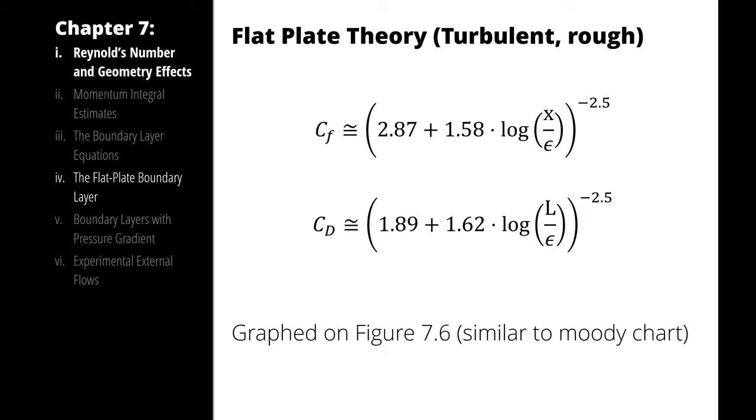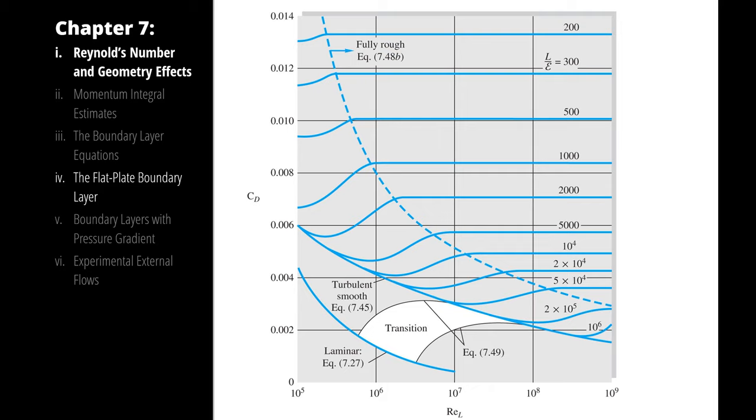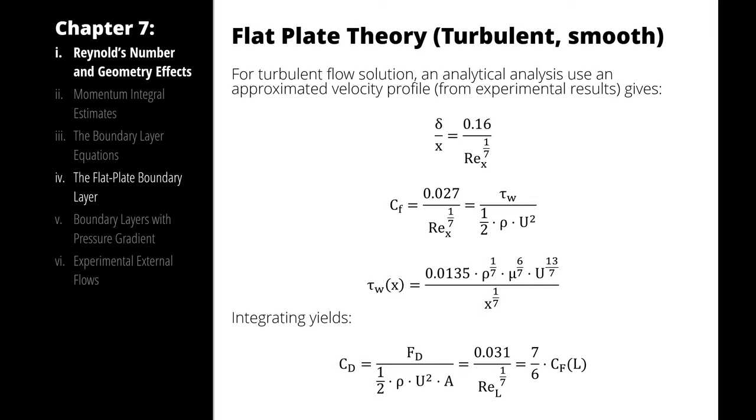For rough turbulent flow, we have these equations, which are correlations from experimental data. Note that the epsilon value here is the same roughness we used in internal flow. And unlike the Colebrook equation, we don't need a fancy calculator to be able to handle this math. It's a lot easier to perform this calculation on a regular calculator. But, just like the Colebrook equation, we also have access to the graphed data, which is convenient in certain circumstances. The blue lines here represent the proportion of the length of the plate divided by the roughness of the surface of the plate. The x-axis is the Reynolds number, again where the length of the plate is the characteristic length for determining the Reynolds number itself. And the y-axis is the coefficient of drag, which again is the drag force divided by one half times the density times the freestream velocity squared times the area of effect.